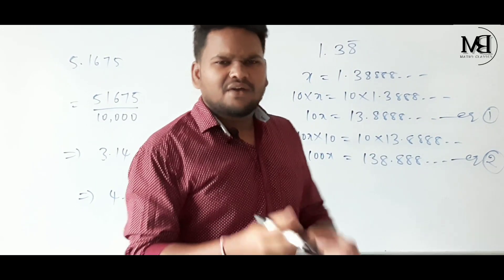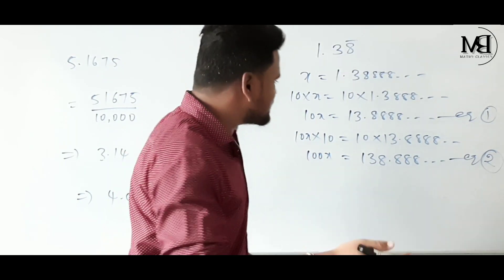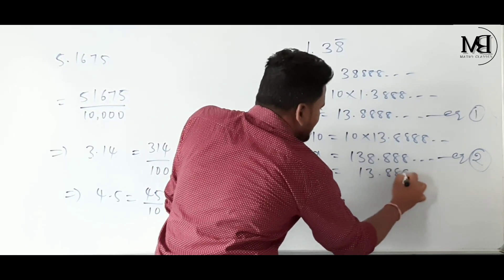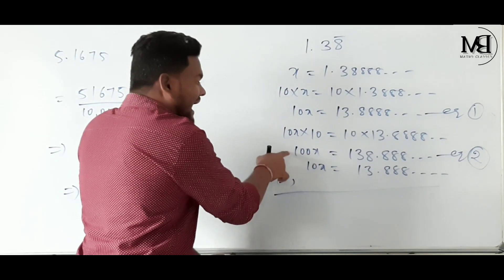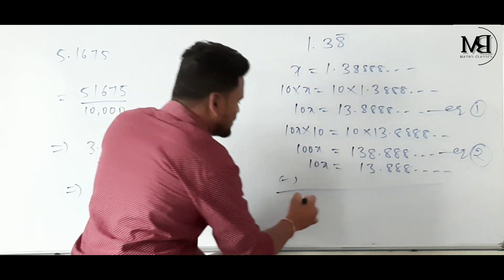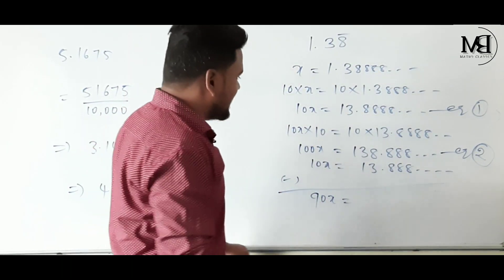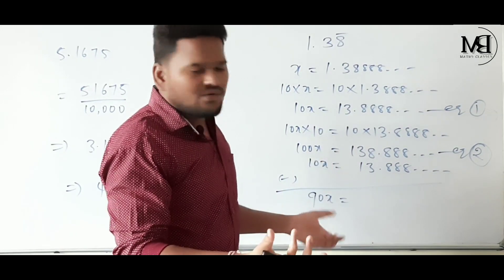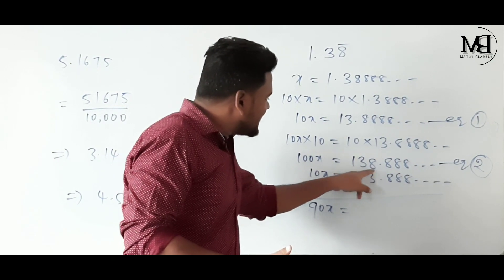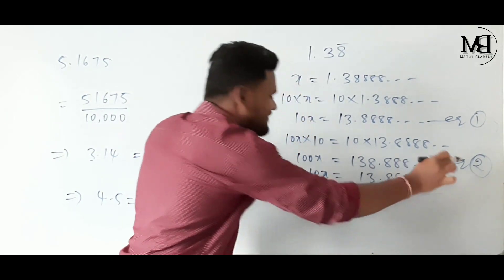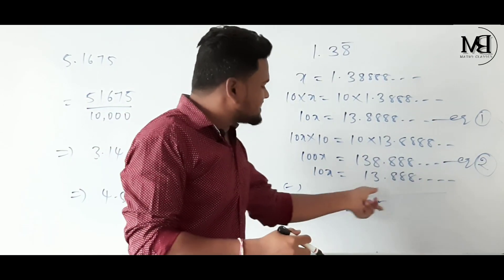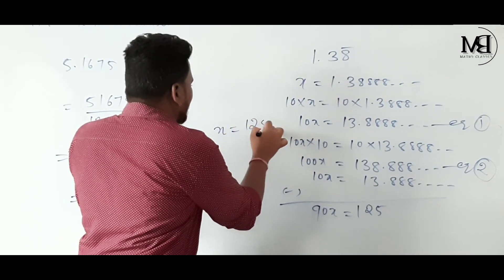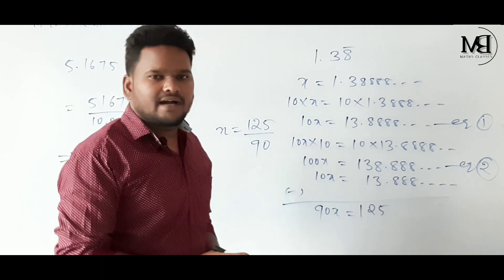Point number 3: subtract equation 1 from equation 2. 100X minus 10X = 90X. Decimal parts: 8−8=0, 8−8=0 — decimal part becomes 0. Whole part: 138 minus 13 = 125. So 90X = 125, and X = 125 by 90. 125/90 is the rational number — that is the conversion.